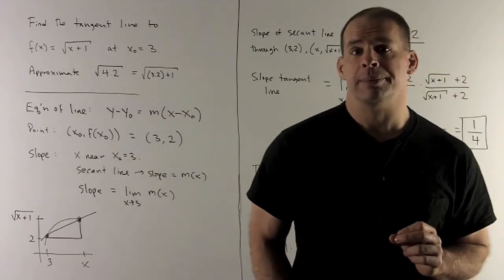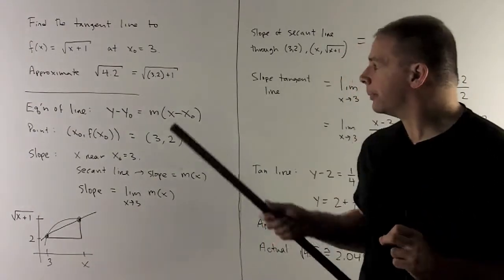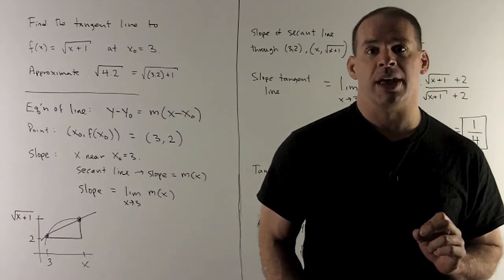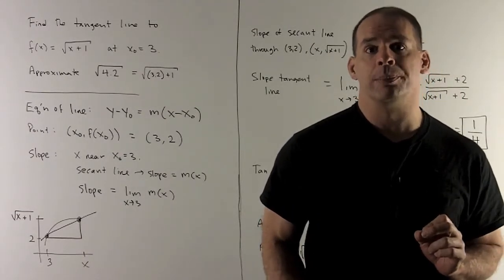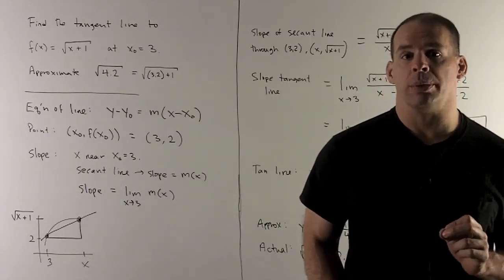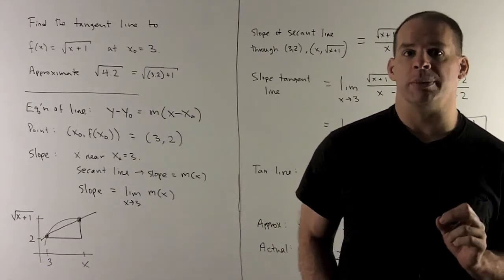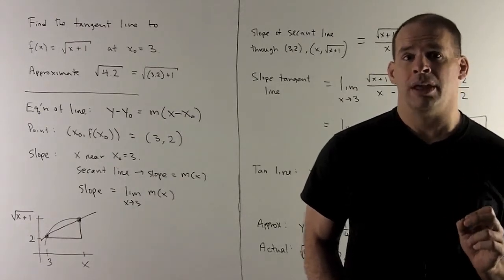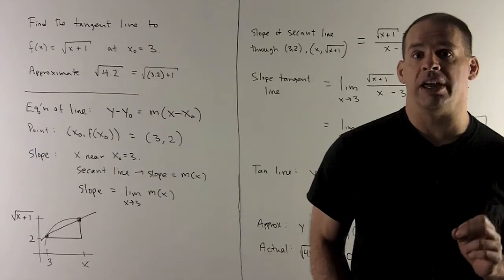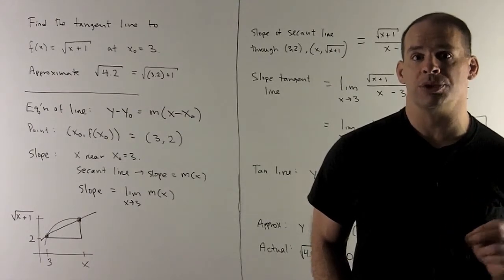First thing we're going to need is the equation of a line. So that's going to be y - y₀ = m(x - x₀), where (x₀, y₀) is a point and m is a slope. Our point is going to be given by taking 3 and putting it into our function to get a point on the graph. So it's going to be (3, √(3+1)), which is (3, 2).